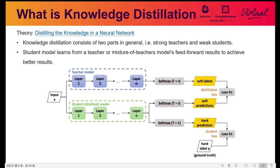Knowledge distillation is a classic model compression technology that transfers knowledge from a complex model to a lightweight model to achieve compression. The knowledge transfer can be understood as a training process where the teacher model is used to train the student model — this is distillation training. After training a good student model, it can be used for actual deployment. The training steps are divided into two: first train a teacher model, then use the teacher model's knowledge to train the student model.